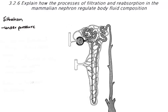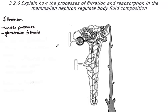Anything that is filtered out is then called glomerulofiltrate. It's called this because there are many other processes — absorption, reabsorption, and secretion — occurring, so the term glomerulofiltrate differentiates it from urine, the end product at the end of the nephron.